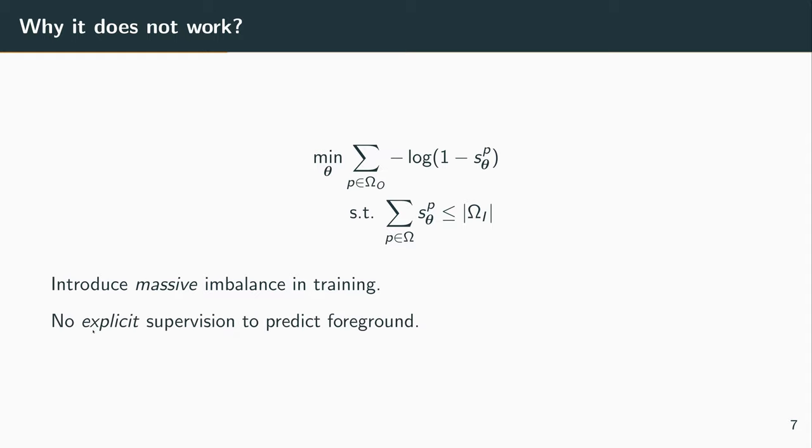The other issue that we have is that there is no explicit supervision to predict the foreground. We explicitly supervise some pixels to be background. We put a limit on how big the foreground can get, but there is nothing pushing up some probabilities for some foreground pixels. So this ends up predicting only background.